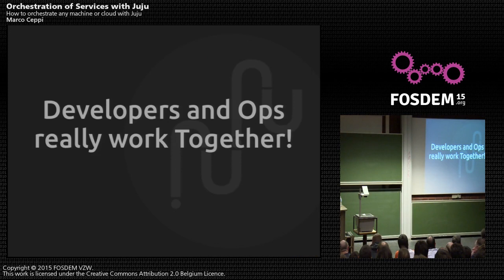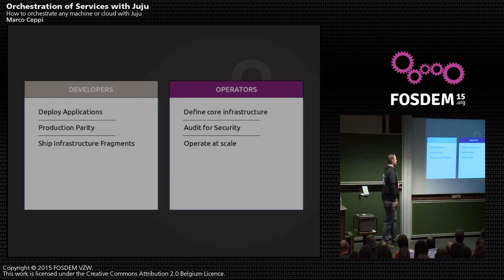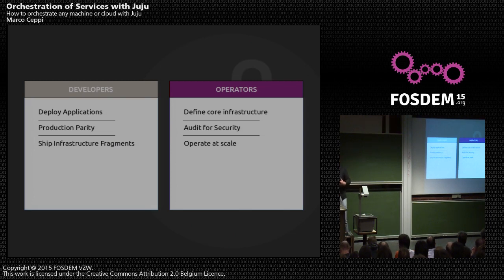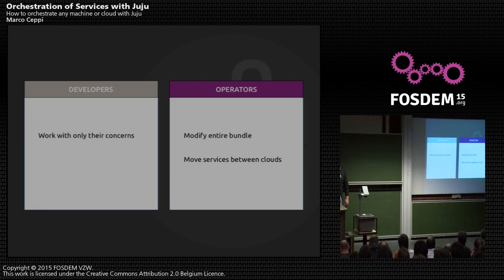In this model, development and ops really work together. Developers get to deploy applications and have production parity. Ops get the opportunity to define the core infrastructure that developers are going to work on, audit anything coming in for security, and operate at scale. Developers are then allowed to ship the fragments of their infrastructure so ops can do their review.